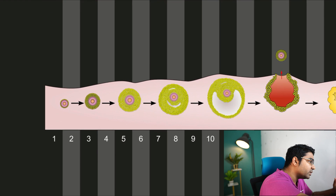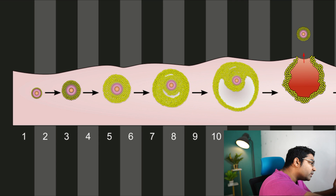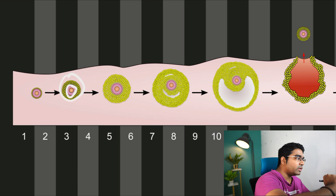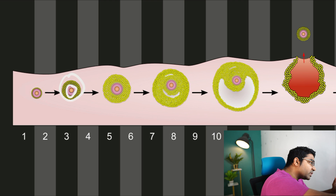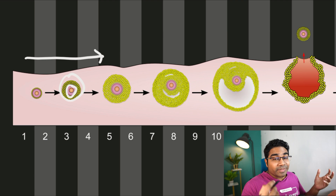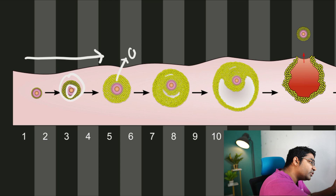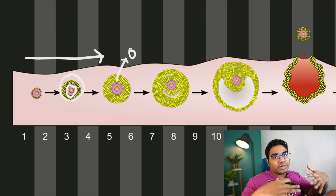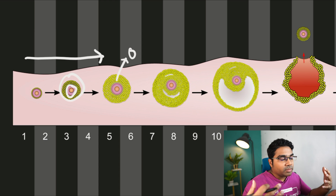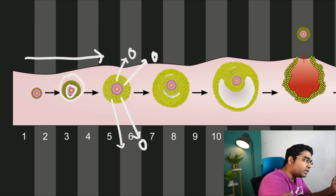Looking at the ovaries from day one to day five, the follicle cells — the cells surrounding the secondary oocyte — are developing. We have growing and developing follicles, and these follicle cells in turn secrete estrogen. As the follicles grow and mature, they secrete more and more estrogen.